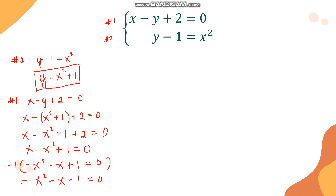We now have a trinomial. Looking for factors of negative 1 that also add to negative 1 — this is not possible, so the trinomial is not factorable. We must therefore use the quadratic formula to find the values of x.